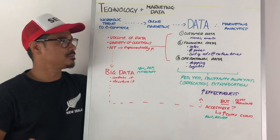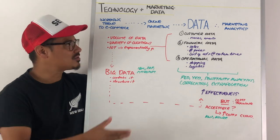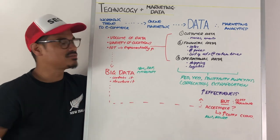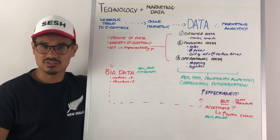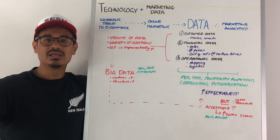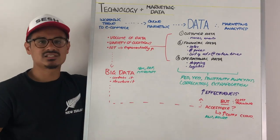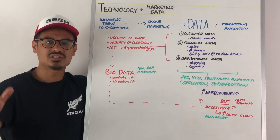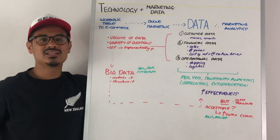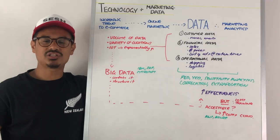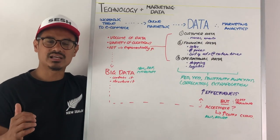Now this data will come in three types. One, customer data, in terms of names and emails. Two, financial data, in terms of sales made, maybe rival sales made if you have access to that — sales made at certain prices, or it could be the cost of ads at certain times, sales at certain times. And also operational data, in terms of shipping and logistics, and for that you'd want to try and increase efficiency to bring down those costs.